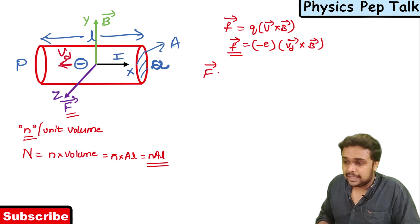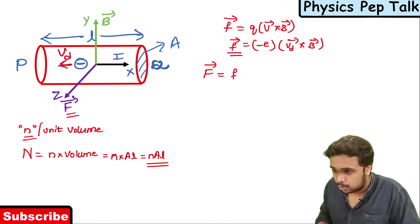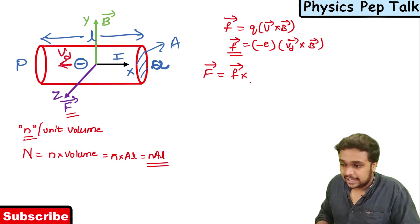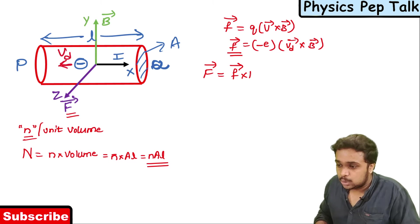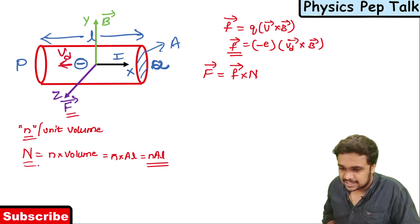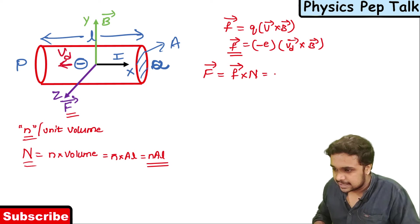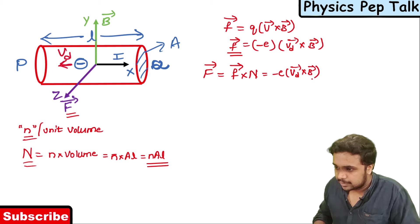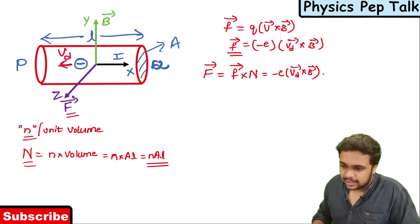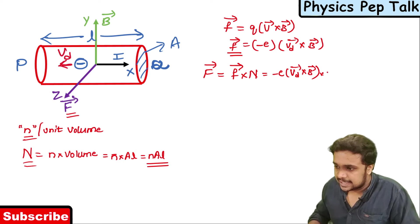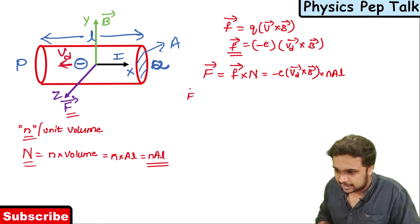The total magnetic force experienced by the conductor, capital F, is equal to the force experienced by each electron multiplied by the total number of electrons. This is: F = (minus e) into (v_d cross B) into N A L.